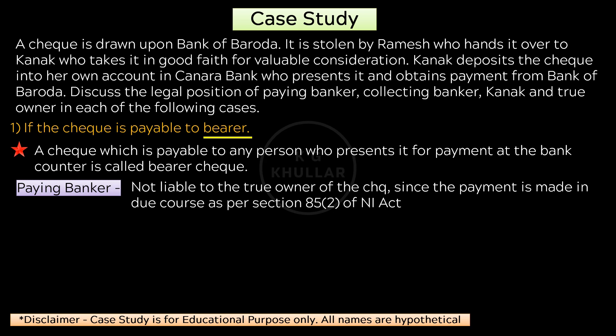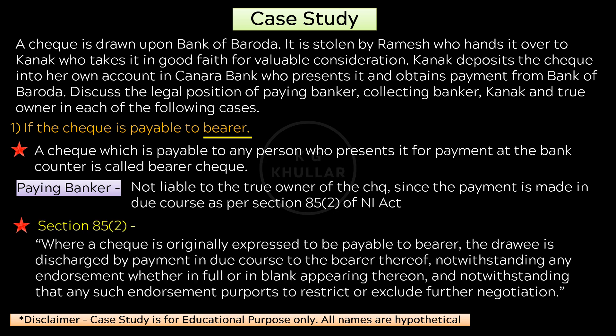So Bank of Baroda is not liable for payment made by it. Section 85/2 of the Negotiable Instruments Act clearly states that where a check is originally expressed to be payable to bearer, the drawee is discharged by payment in due course to the bearer thereof, notwithstanding any endorsement whether in full or in blank appearing thereon, and notwithstanding any such endorsement purports to restrict or exclude further negotiation.